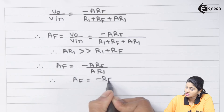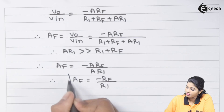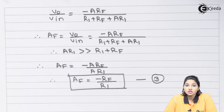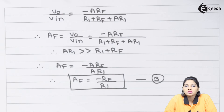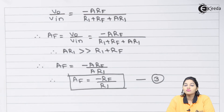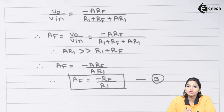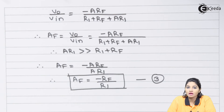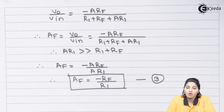Therefore A_f equals minus R_f divided by R1. This is equation number three — the closed loop gain of the op-amp in inverting configuration. The negative sign indicates the output is 180 degrees out of phase with respect to the input, which is why it is called an inverting amplifier. The gain can be easily changed by changing the values of R_f and R1.